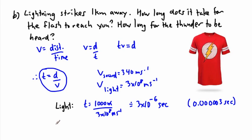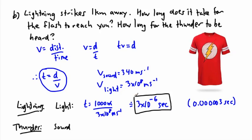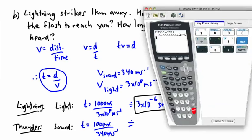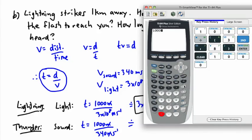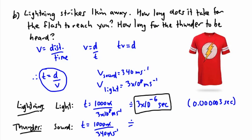Whereas, instead of the light, we can look at the sound. That was the lightning. This is the thunder. The lightning only takes 3 times 10 to the minus 6 seconds to reach you. Whereas thunder, which is sound, the time it's going to take is still 1,000 meters, that's the distance it has to travel. But we divide that by the speed of sound, which is only 340 meters per second. So I get approximately 1,000 divided by 340, and if I do that I get pretty much 3. So it's around 3 seconds.